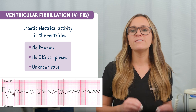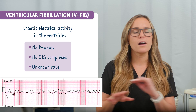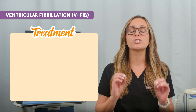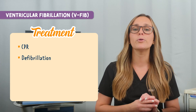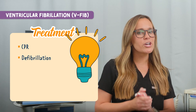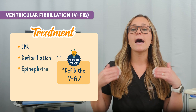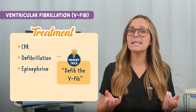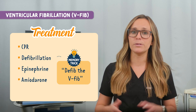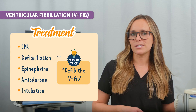When you see VFib, it's a full code — this rhythm is not compatible with life. The first thing you need to do is start CPR immediately and get the defib ready. You can remember this by the memory trick: defib the VFib. Then prepare to give epinephrine every three to five minutes, and if needed, add amiodarone. You may also need intubation for airway support.